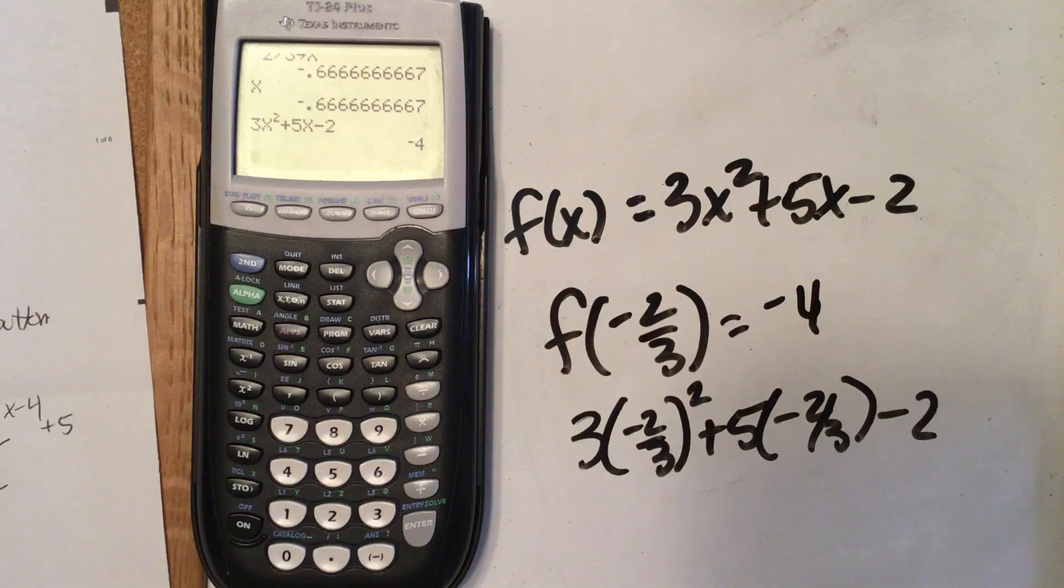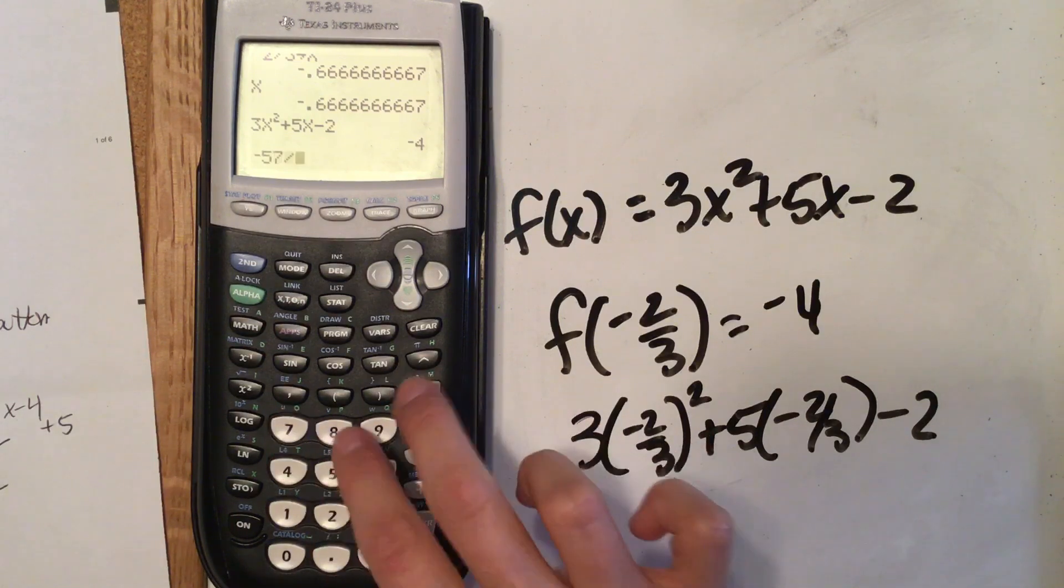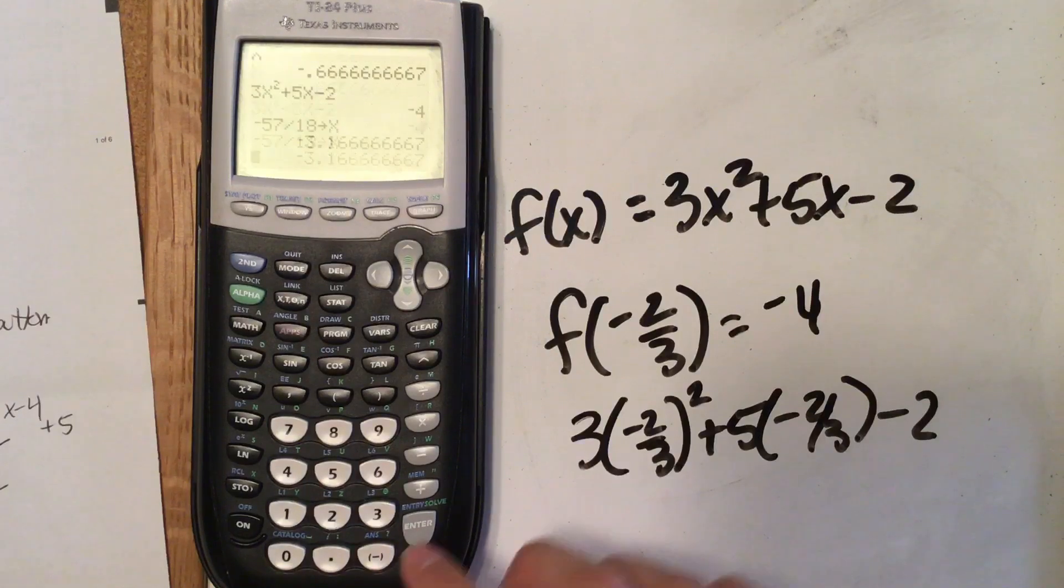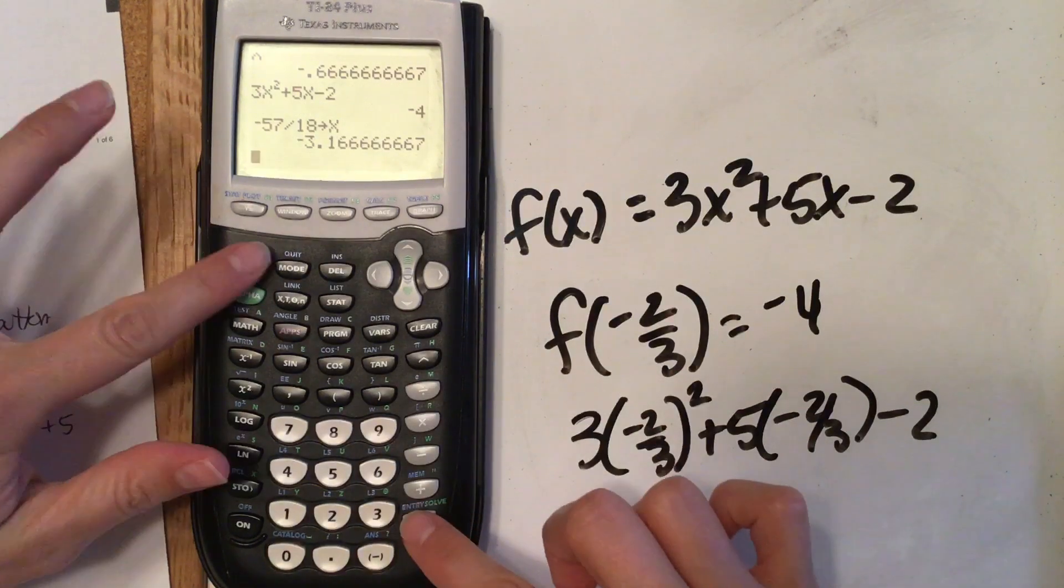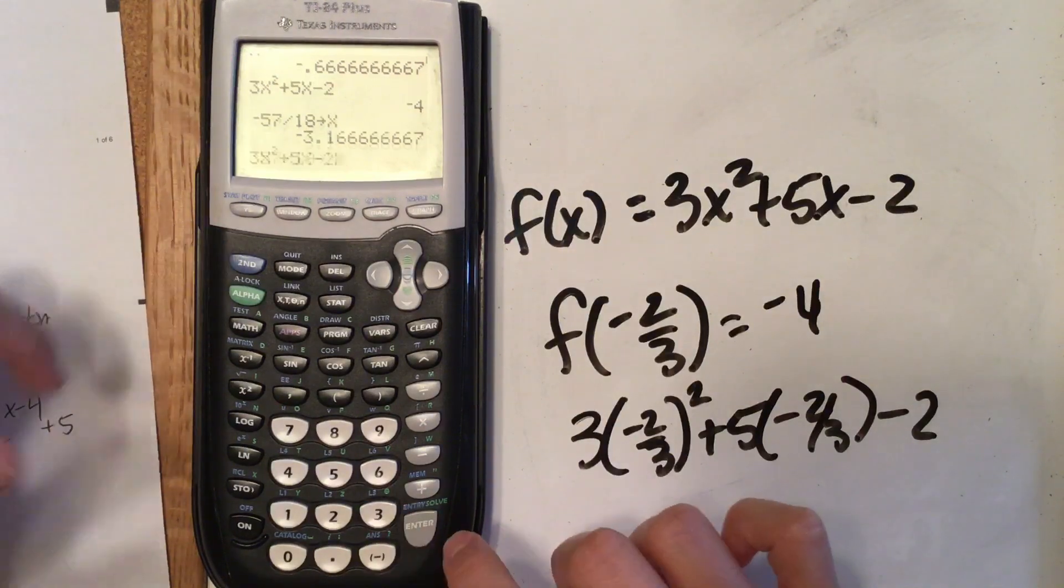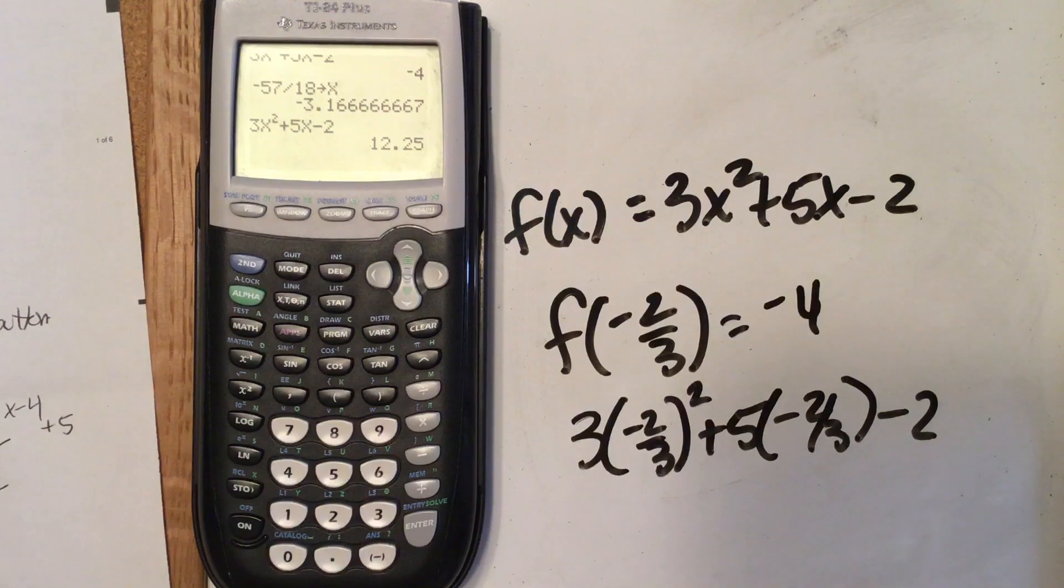If I wanted to calculate the same thing but with a different number, say we want to do -57/18, and I'm going to store that to x. Then we can also use our second enter button, but I don't want this previous one. I want the one before that, so I hit second enter twice. I've now stored that to x, and then it will give me this new number. So we're going to have 12.25.